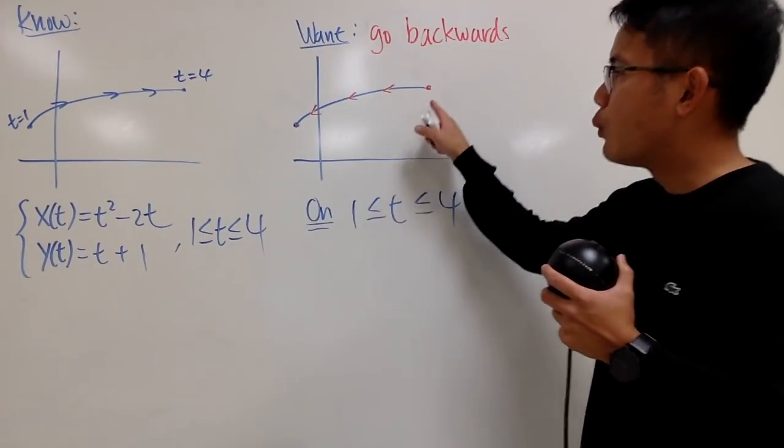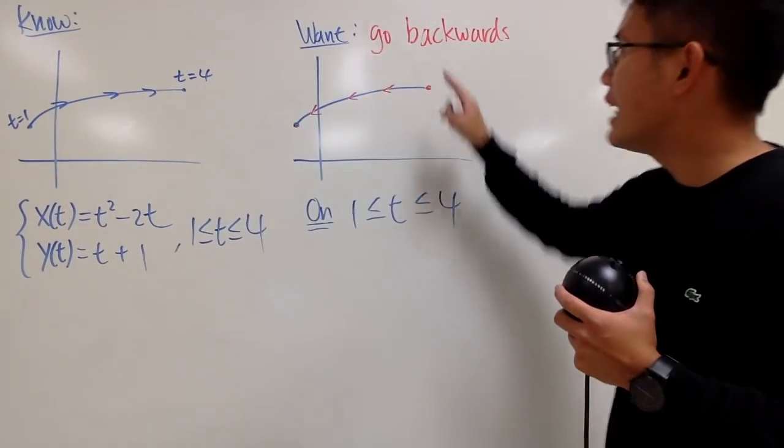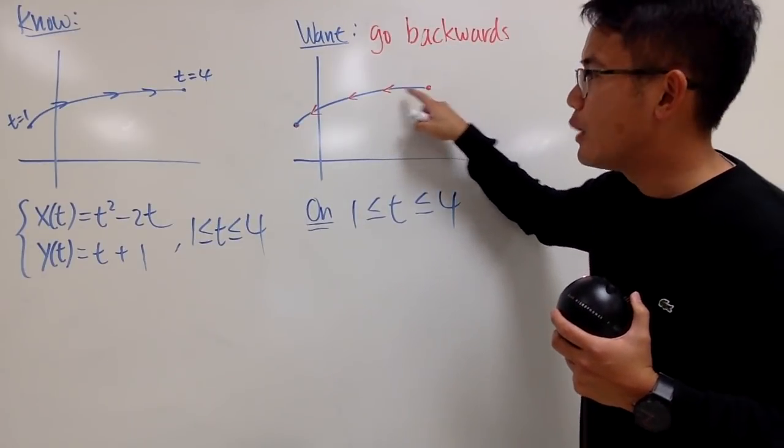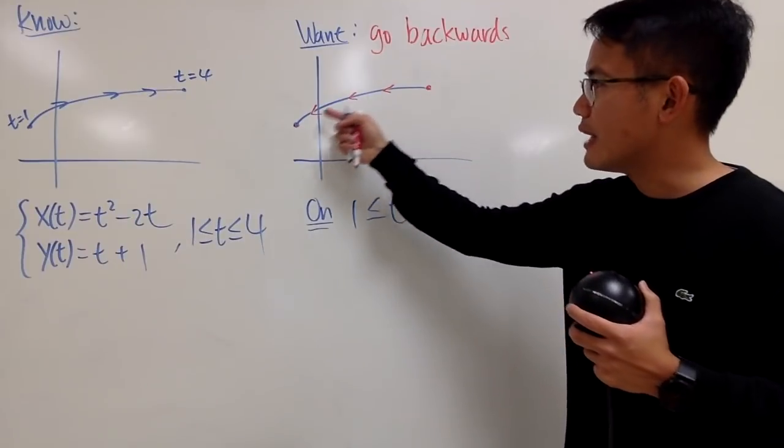what if I want to have the same piece of the curve, but I want to go backwards, meaning I want to start right here, and then I want to end right here. So you see the arrows like that.